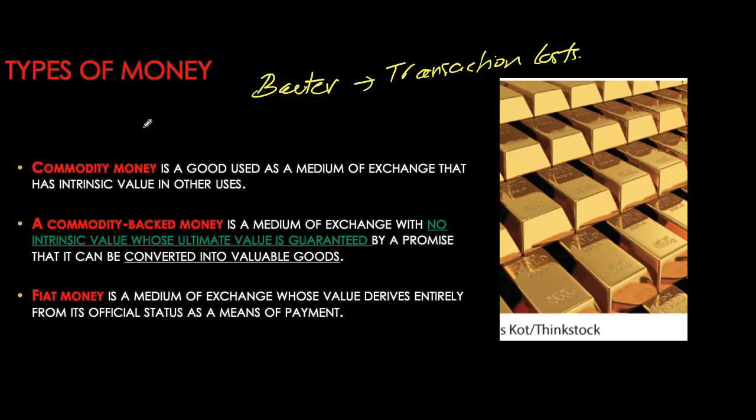Fiat money has seen its own evolution — from paper currency and coins to checkable deposits, and then to electronic payments. We can now use plastic money or debit cards to purchase goods and services, which essentially gives us the ability to access our checking accounts. Instead of writing checks, we use our debit cards to access those accounts.